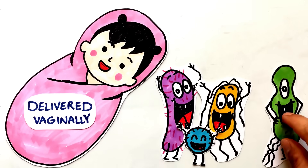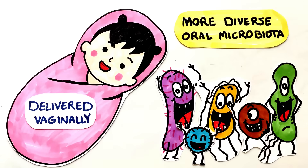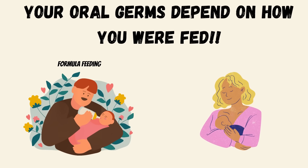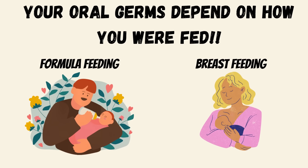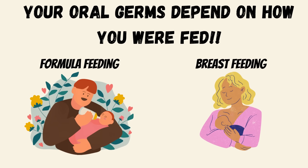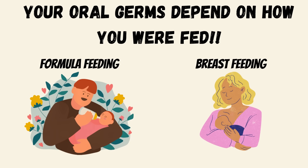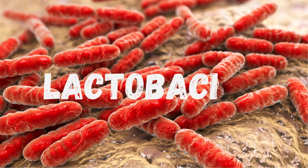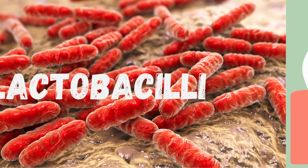Infants with vaginal delivery receive a more diverse oral microbiota. Feeding method of the baby also makes a difference. For example, compared with formula feeding, breastfeeding leads to colonization of more lactobacilli in the oral cavity of the babies.